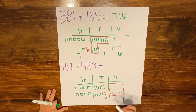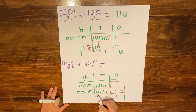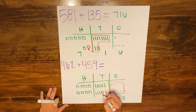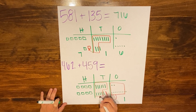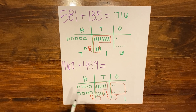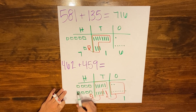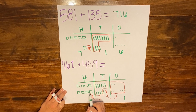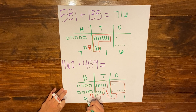I'll count out ten tens: 1, 2, 3, 4, 5, 6, 7, 8, 9, 10 — and this group becomes one hundred. Now as I'm adding my hundreds, I include that regrouped one: 1, 2, 3, 4, 5, 6, 7, 8, 9. So I have nine hundreds.